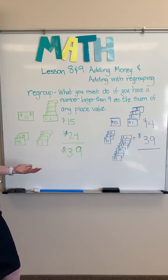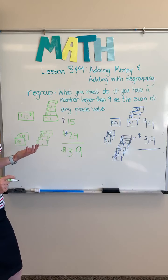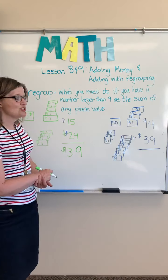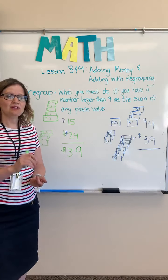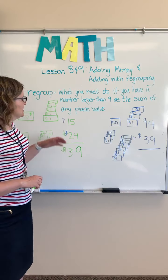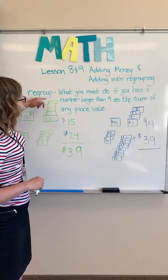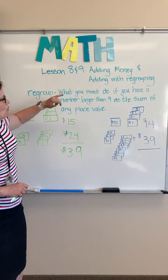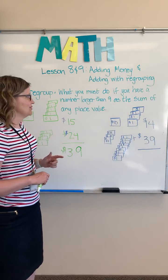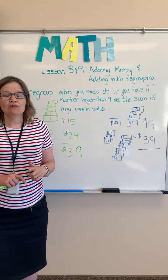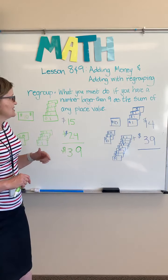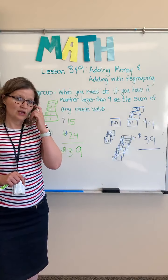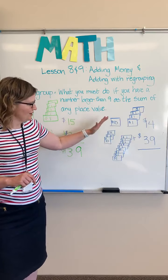Now, what would we do if things got a little more challenging? I would like you to write this in your notes. Regrouping is what you must do if you have a number larger than nine as the sum of any place value.